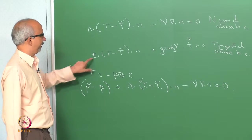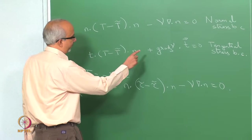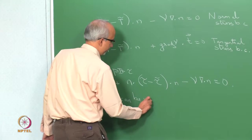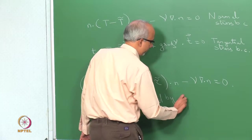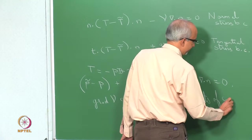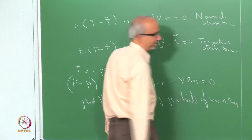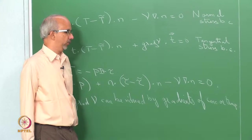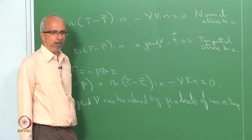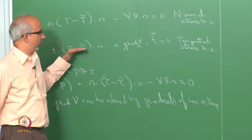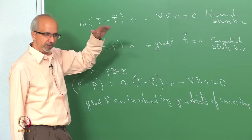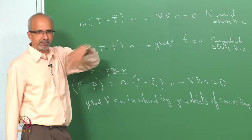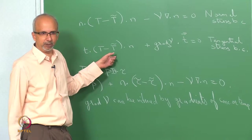When it comes to the tangential stress boundary condition, a gradient of gamma can be induced by gradients of concentration or temperature. What we are interested in is the Marangoni convection problem, which involves gradients of temperature. I am going to talk about how this boundary condition manifests itself in the context of the Marangoni convection problem, because once you know how this boundary condition translates, you can solve — this is the only new boundary condition coming into the picture.